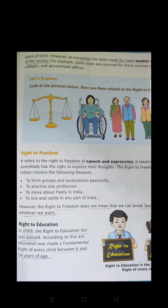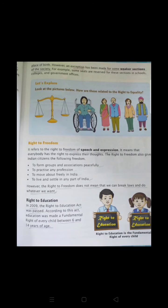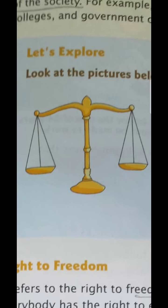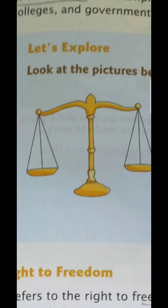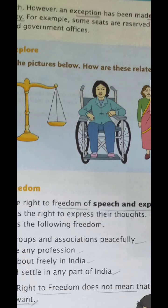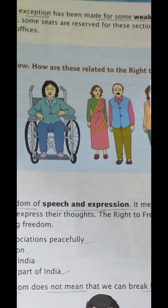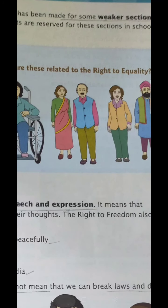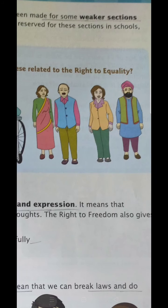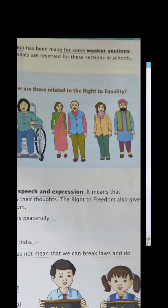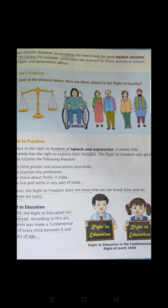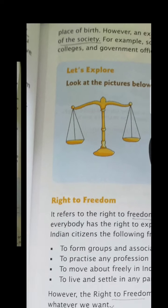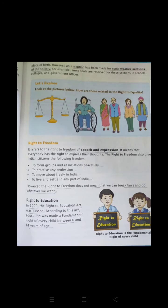As you can see in this picture — what does it represent and how is it related to the right to equality? This symbol represents 'Nyai' — justice. Along with that you can see a person in a wheelchair, a man and woman, and a Punjabi family. They are all equal — the person on a wheelchair, the Punjabi family, and the Hindustani family are all equal before the law, which this symbol represents.